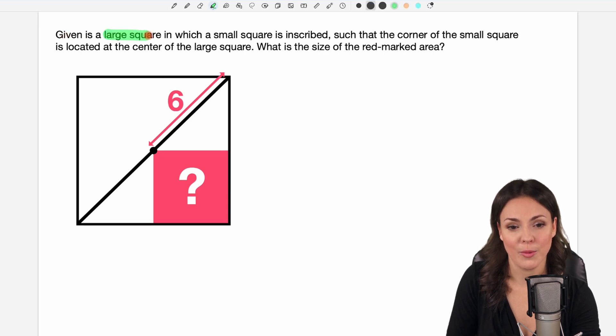Given is a large square in which a small square is inscribed such that the corner of the small square is located at the center of the large square. That sounds a little bit confusing so let's take a look at the picture first.